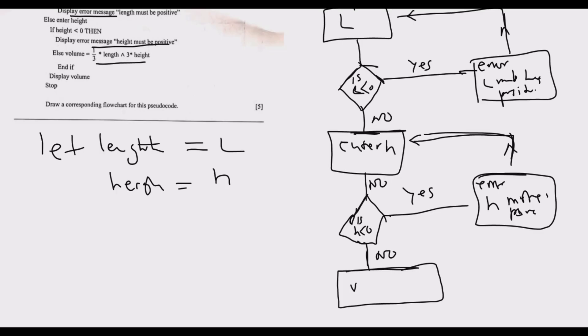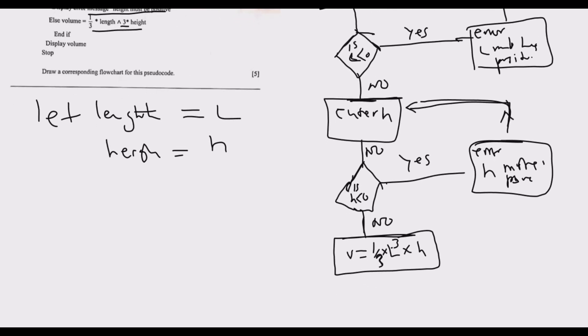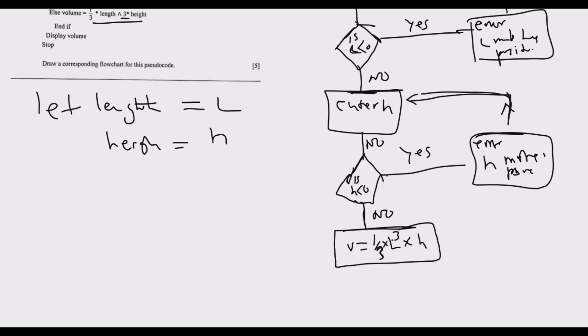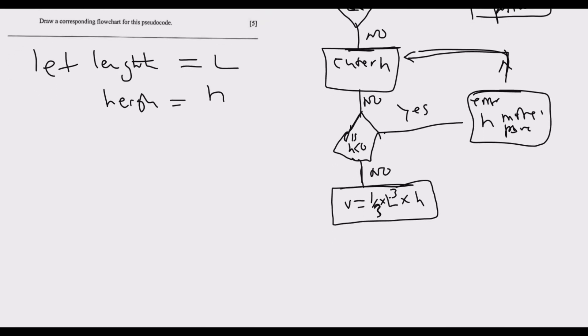We can create V equals one-third multiplied by L to the power three, remember this, then multiplied by H, which is the height. After you calculate that, what comes next? After you calculate, you need to display the answer.